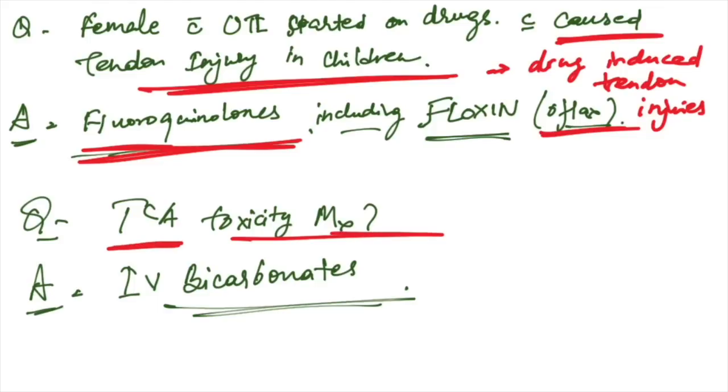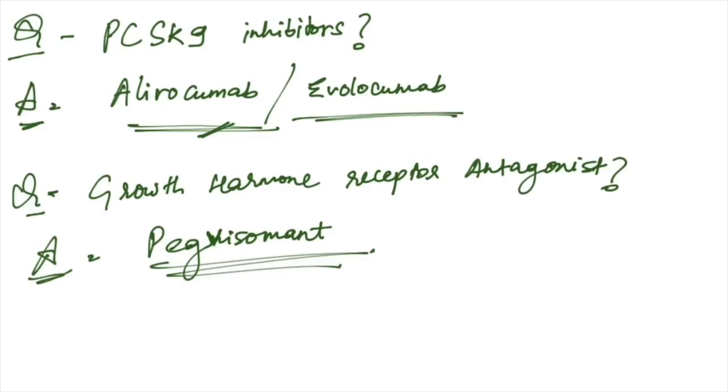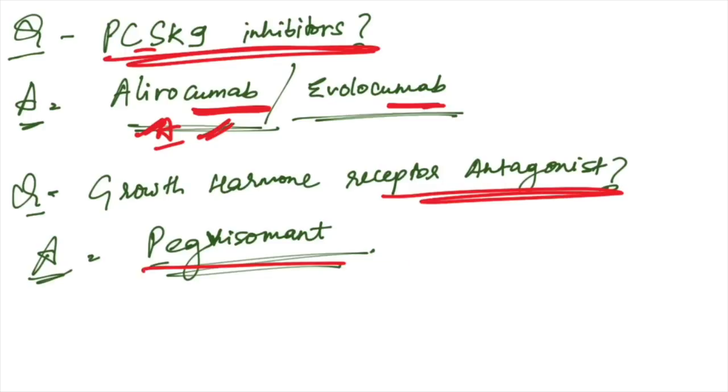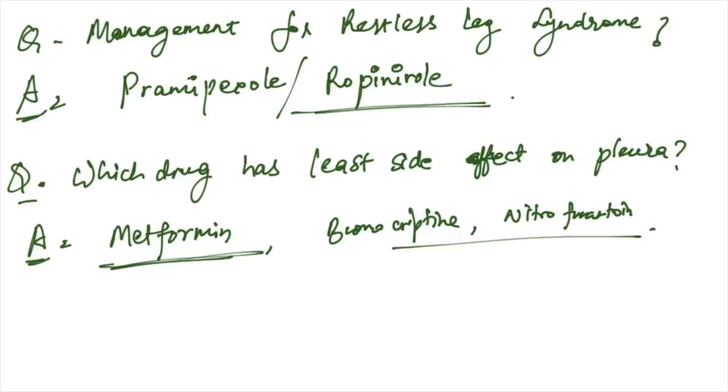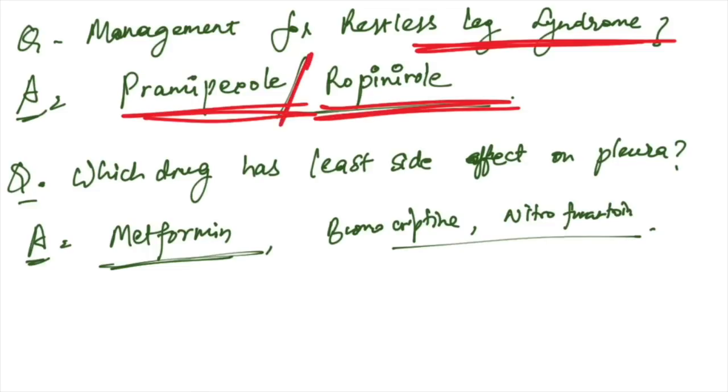TCA toxicity - what is the management? Management is gastric lavage, but in the options there is IV bicarbonates. This is the best management of choice for TCA toxicity. PCSK9 inhibitors: they are alirocumab and evolocumab. Growth hormone receptor antagonist: pegvisomant is the drug. Management for restless leg syndrome: pramipexole and ropinirole are the management.